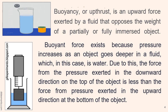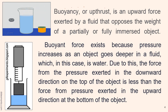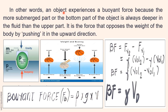Due to this, the force from the pressure exerted in the downward direction on the top of the object is less than the force from the pressure exerted in the upward direction at the bottom of the object. In other words, an object experiences a buoyant force because the more submerged part, or the bottom part, is always deeper in the fluid than the upper part. It is the force that opposes the weight of the body by pushing it upward, as shown in the illustration — there is an upward force opposite to the weight applied downward.